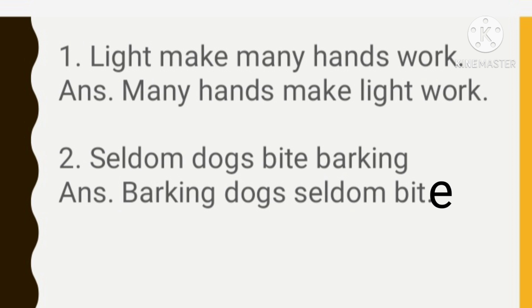The second jumbled proverb is 'seldom dogs bite barking.' The correct sequence is: barking dogs seldom bite. The Hindi meaning of this proverb is 'bhaukne wale kutte kaate nahi hai.' Dogs that bark rarely bite — joo kutte bhaaukte hain wo rarely bite karte hain.